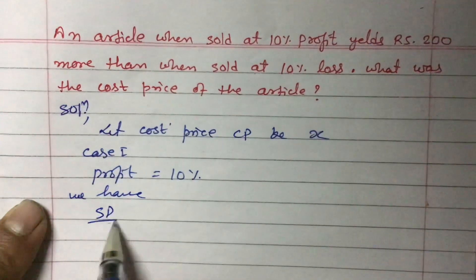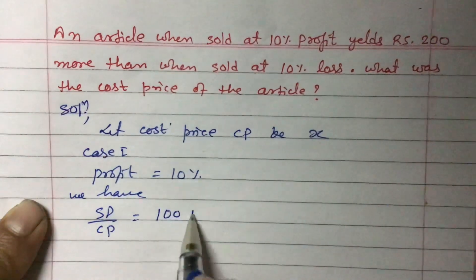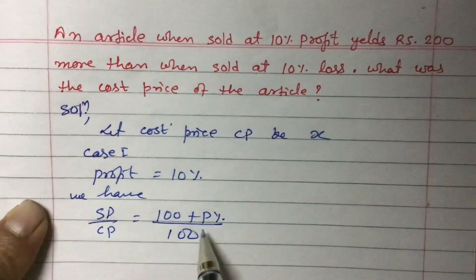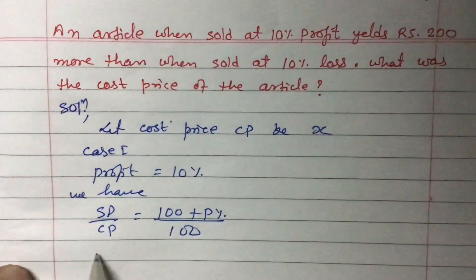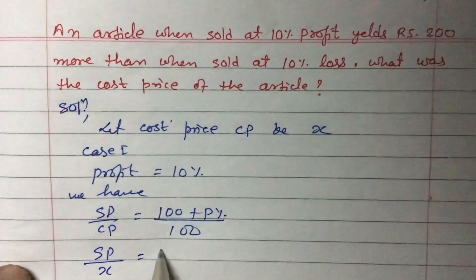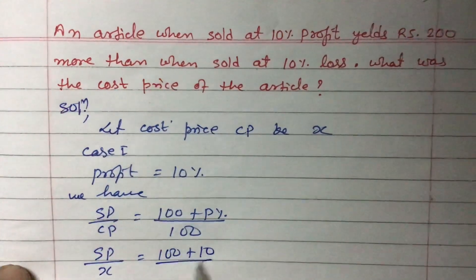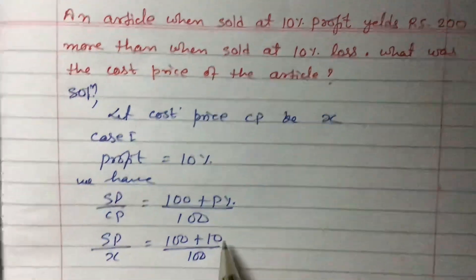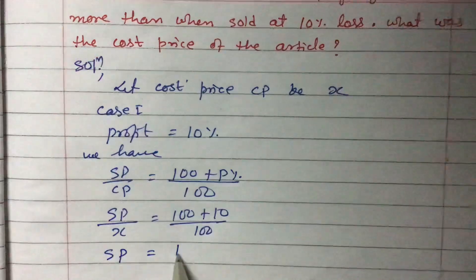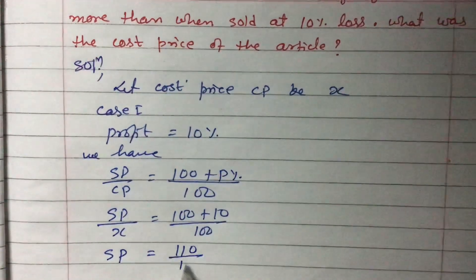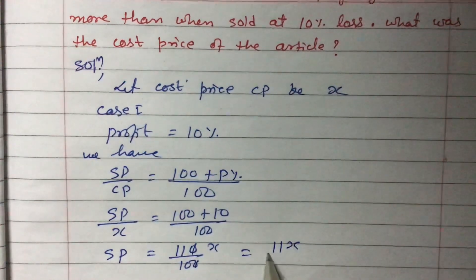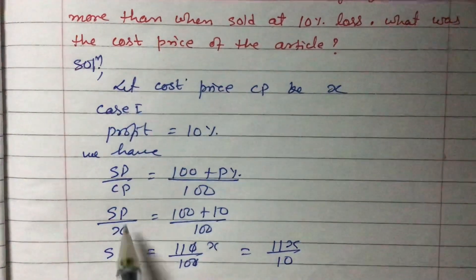The formula is: SP divided by CP equals (100 plus profit percent) divided by 100. So SP divided by X equals (100 plus 10) divided by 100, which gives SP equals 110 by 100 times X. The zeros cancel, so SP1 equals 11X by 10.